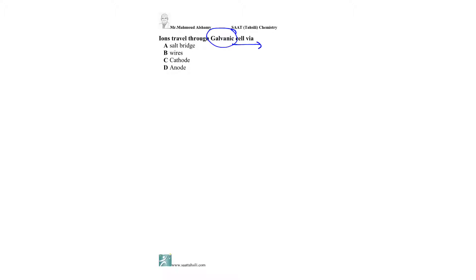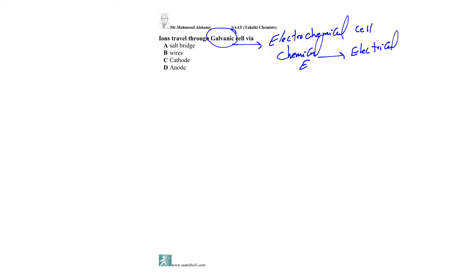Ions travel through a galvanic cell. The galvanic cell is a type of electrochemical cell whose function is to convert chemical energy into electrical energy. This is the basic cell of the battery — multiple galvanic cells form a battery. The galvanic cell is also called a voltaic cell. What actually happens in the galvanic cell is it converts chemical energy into electrical energy to produce a current.